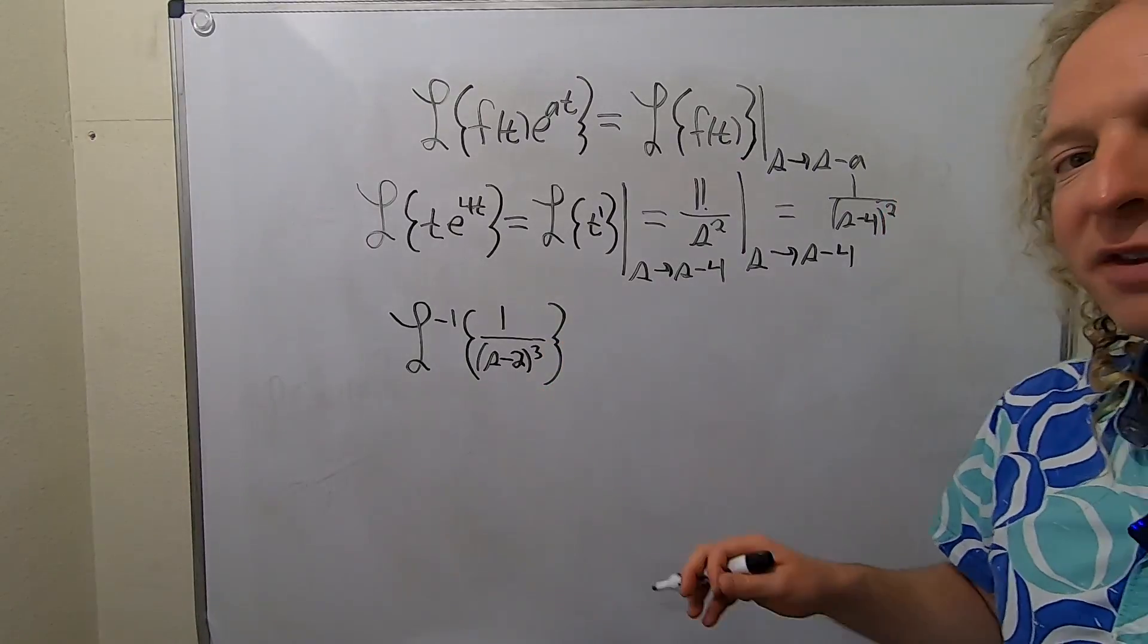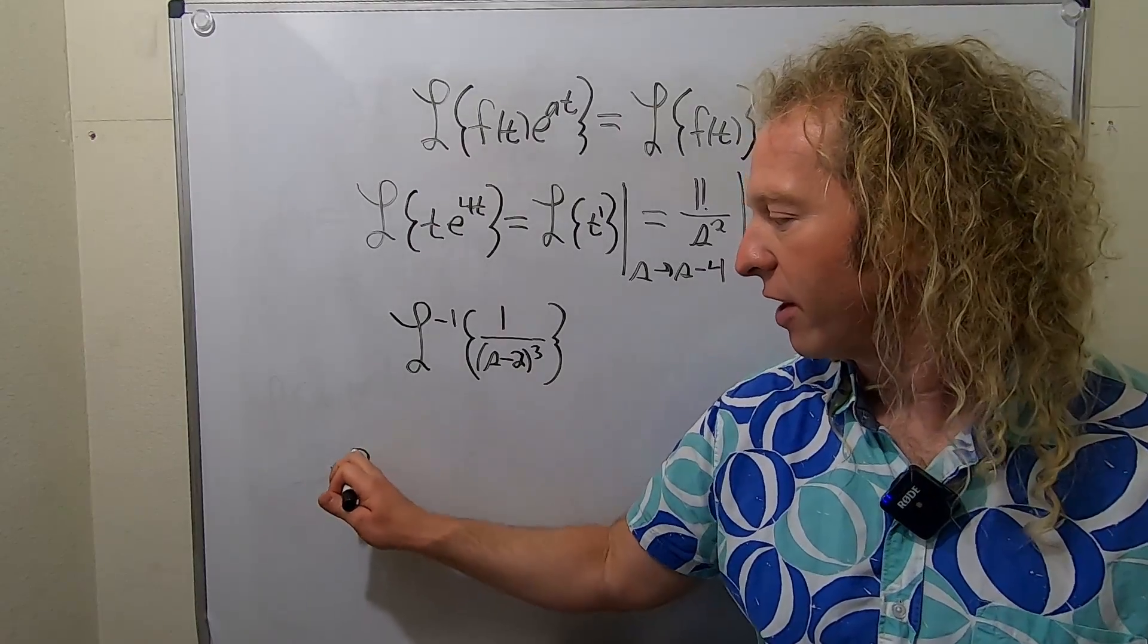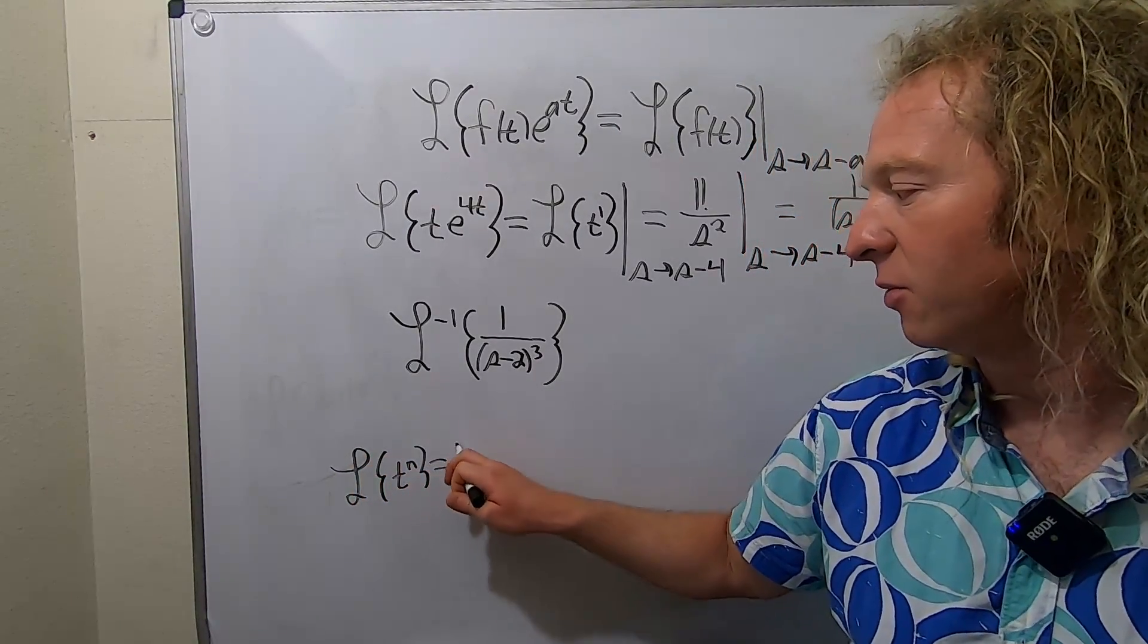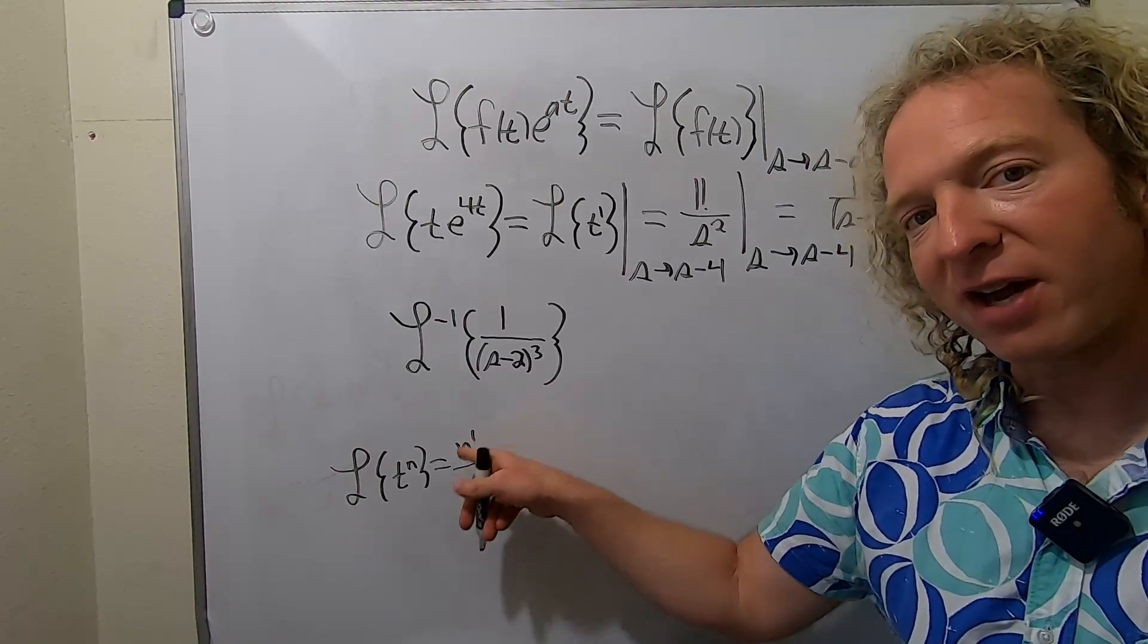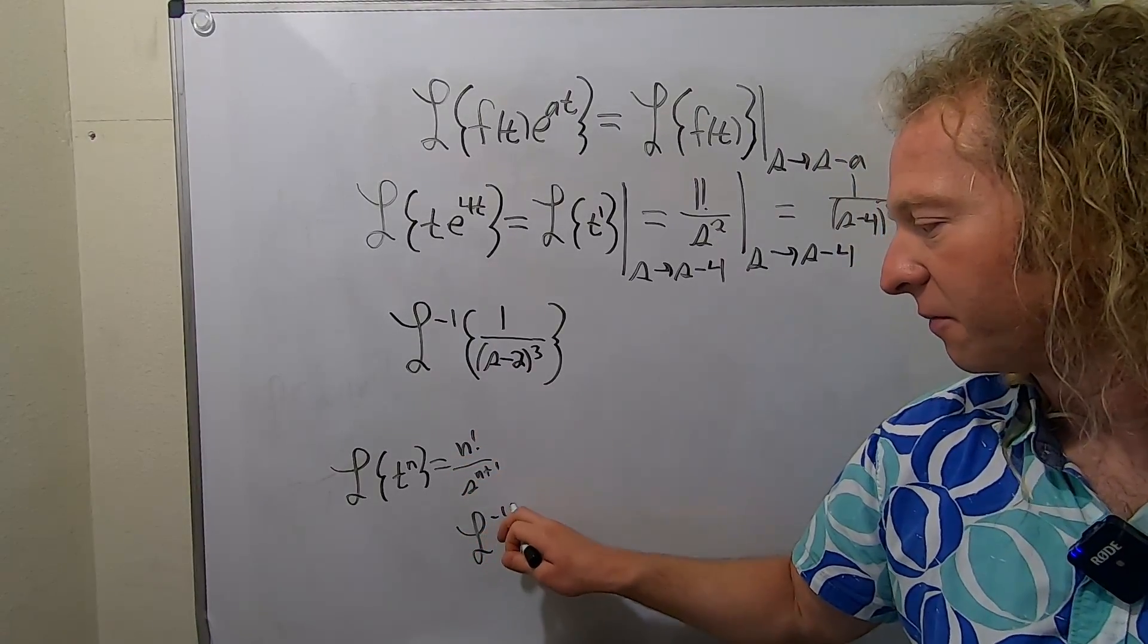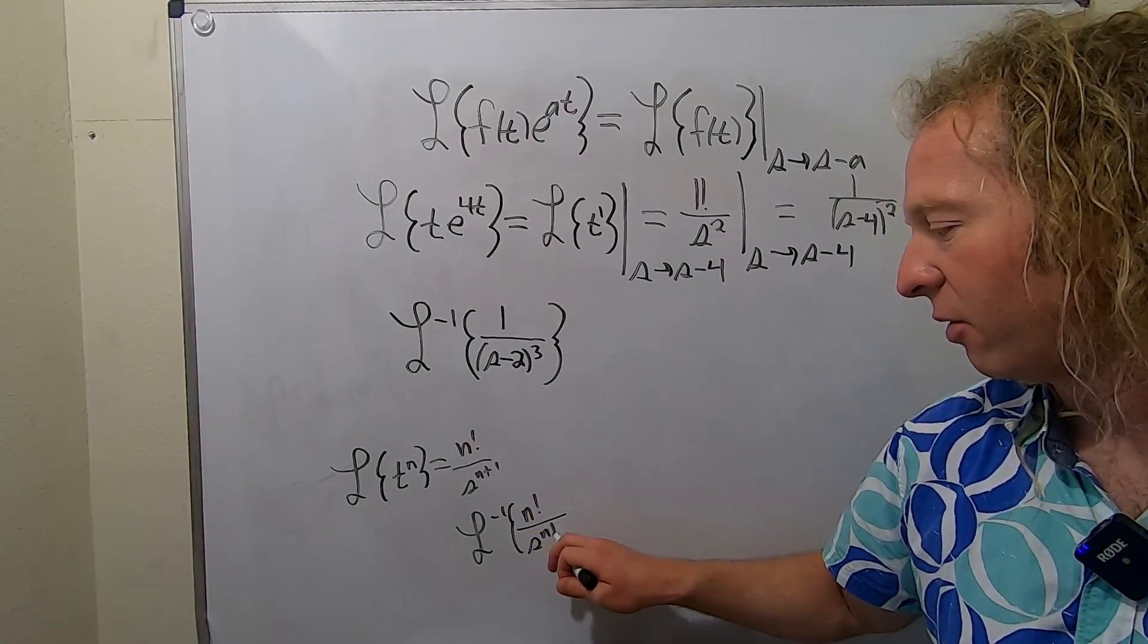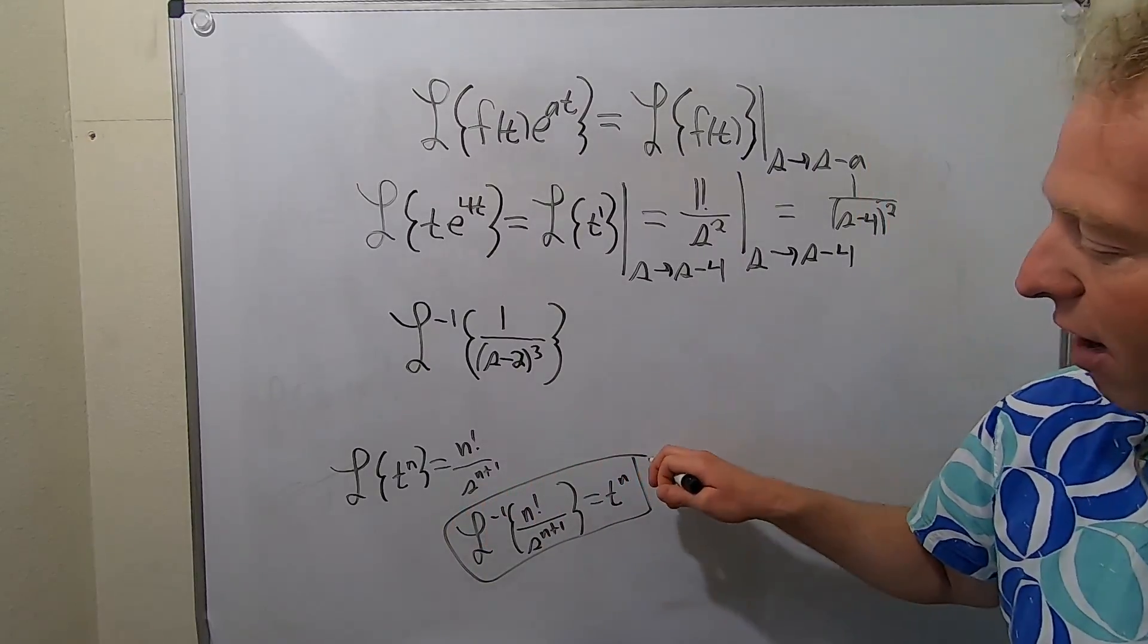So we're trying to find the inverse Laplace of this. So we have to use a formula here. So recall that if you have the Laplace transform of t to the n, that's equal to n factorial, and it's 1 higher on the bottom. So finding the inverse Laplace of this means if we have n factorial over s to the n plus 1, that's t to the n.